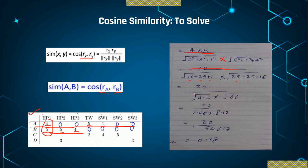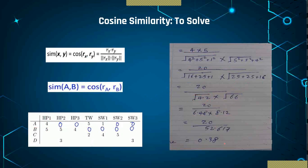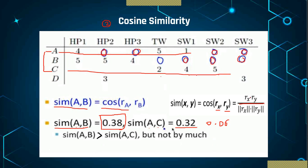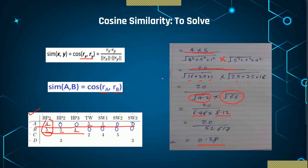So we get 20 divided by root of 42 times root of 66. Root of 42 is 6.48 and root of 66 is 8.12 — giving 20 divided by 52.617, which equals 0.38. So the similarity between A and B is 0.38. When you solve the similarity between A and C — considering the rating values 4, 5, 1 and 2, 4, 5 — you get 0.44. Wait, so actually the similarity between A and C is greater, which contradicts the earlier result. Hence this shows the cosine similarity between A and B versus A and C using this function.